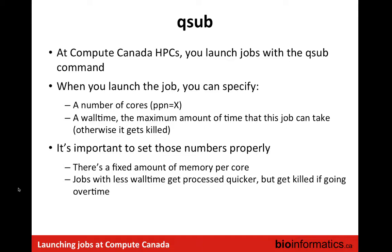For this workshop today, we will not be launching jobs on a scheduler — we have enough resources for everyone to run all the software we will use all at once. But normally when launching jobs on a scheduler, you use the 'qsub' command. There are many parameters for qsub: you can specify the number of cores and the wall time, which is the amount of time you think the software will take to execute. It's important to set these numbers properly — if an assembly takes three days to complete and you say ten hours, the job gets killed after ten hours and you have to start again.